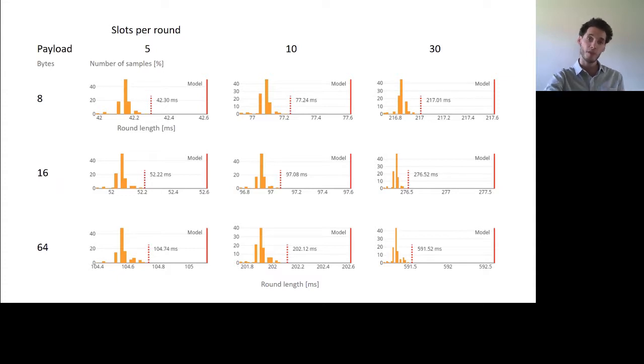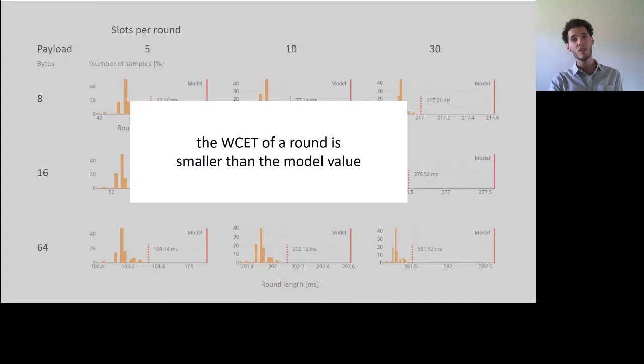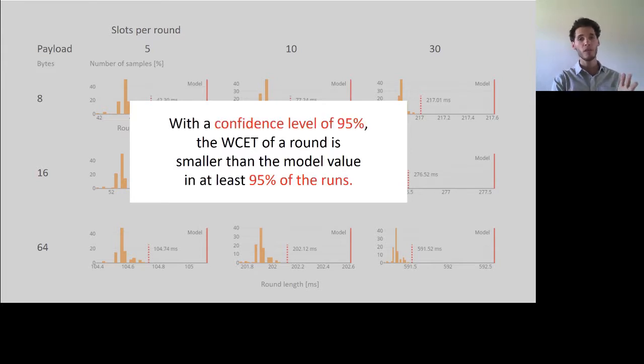Based on this experimental data, what we can claim is that we can predict that the worst case execution time of any round will indeed be smaller than the model value in at least 95 percent of the runs, and that will hold with the probability of 95 percent. That is the type of claim we can make, the strongest claim we can make actually based on the data we've collected.